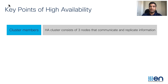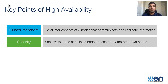A split-brain scenario may occur when there is a temporary failure of the network connection between the cluster nodes. To avoid the split-brain scenario, when a node fails, the other two nodes create a quorum and establish a network partition between themselves and the failed node. In a multi-node environment, the security features of a single node are shared to the other two nodes, including any certificates or trust pools.